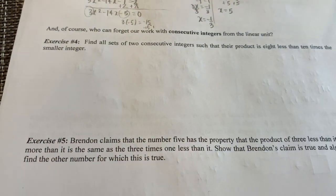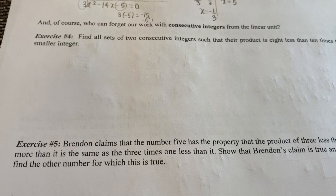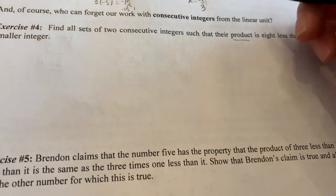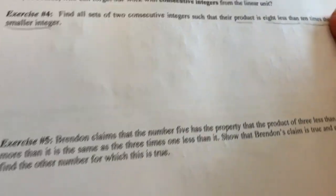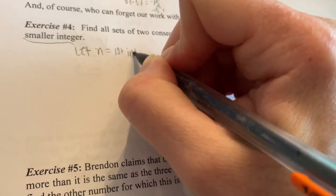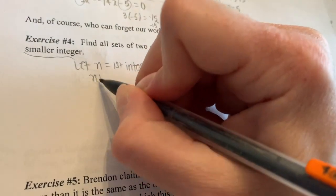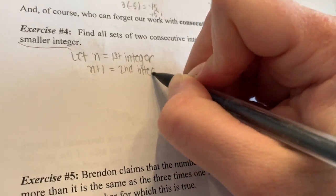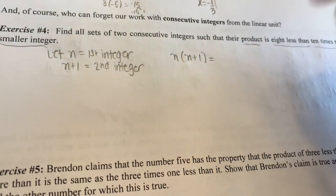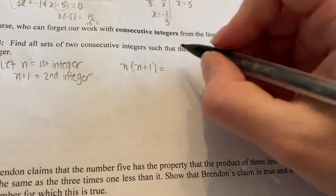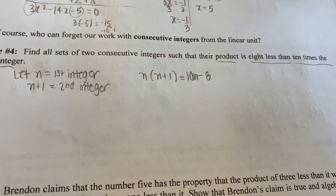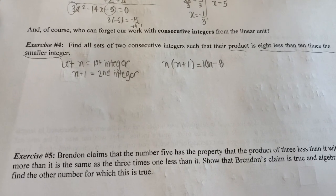Who can forget our work with consecutive integers? For exercise 4, find the sets of two consecutive integers such that their product is 8 less than 10 times the smaller integer. Let n equal the smaller integer, and n plus 1 will be the larger integer. Their product n times (n plus 1) is equal to 8 less than 10 times the smaller one: 10n minus 8. Pause and try to solve this one, then unpause to check.